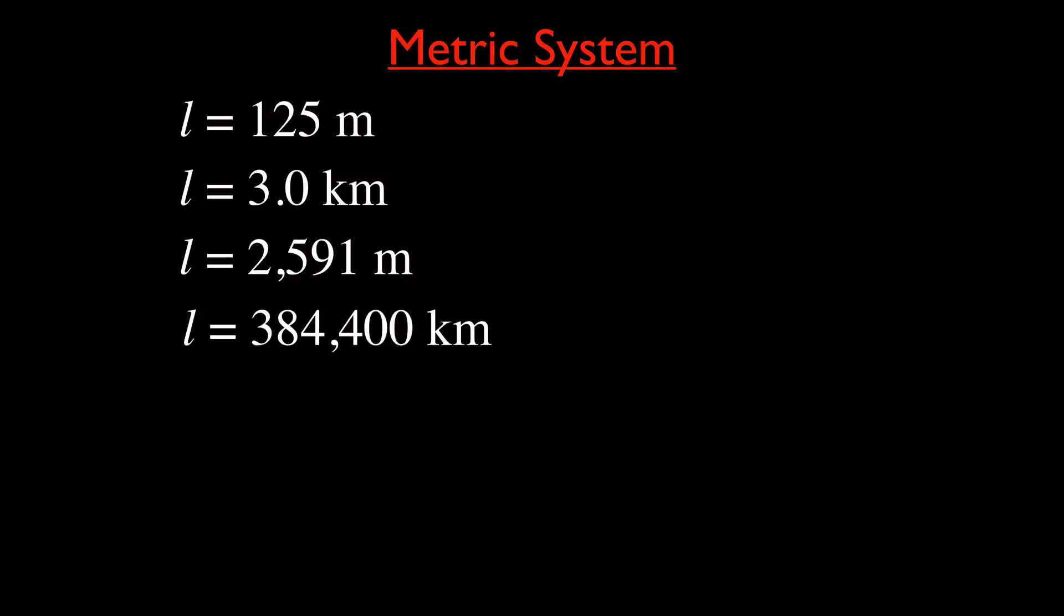And then we can go on to some of the lengths. We have lengths like 125 meters. I just want to give you an idea about how we write these down. Length is 3.0 kilometers. We have length is 2,591 meters. And then this is 384,400 kilometers. Anybody know what that is? That is the distance between the Earth and the moon. And then when we put that in equation, we want to often use that in meters, because the base unit is just the meter for length. So we can convert kilometers to meters, because there's 1,000 meters in a kilometer. So we can just say 384,400 times 10 to the third meters.